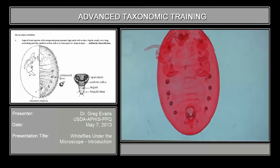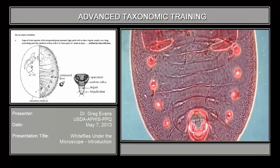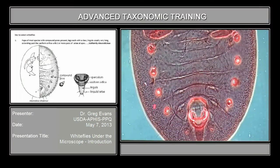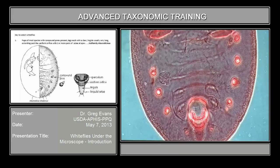If you go to your key, the first couplet says pupae of most species with compound pores. These are the compound pores that define most species of the subfamily Aleyrodinae. Going up in power, you'll see that they're comprised of different sections or splices — each one of these pores is composed of different splices. Sometimes in the other subfamily, they may have large pores, but they're just singular.